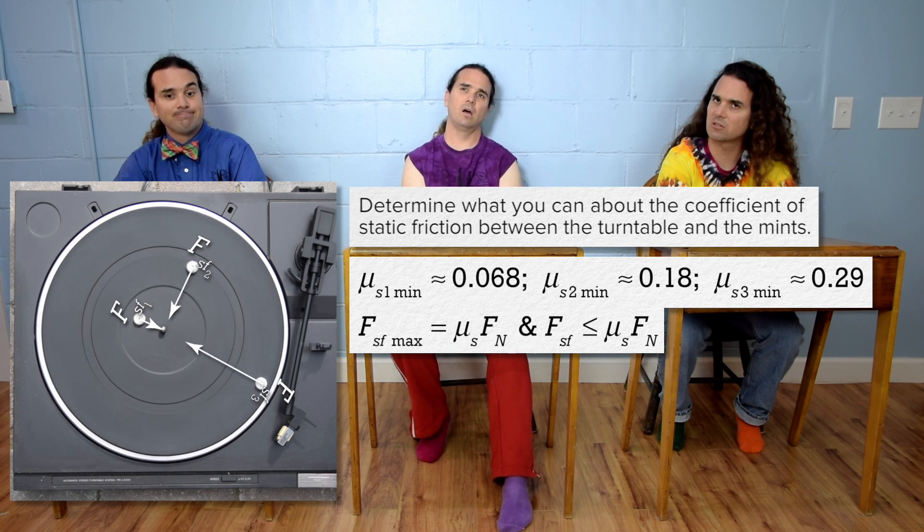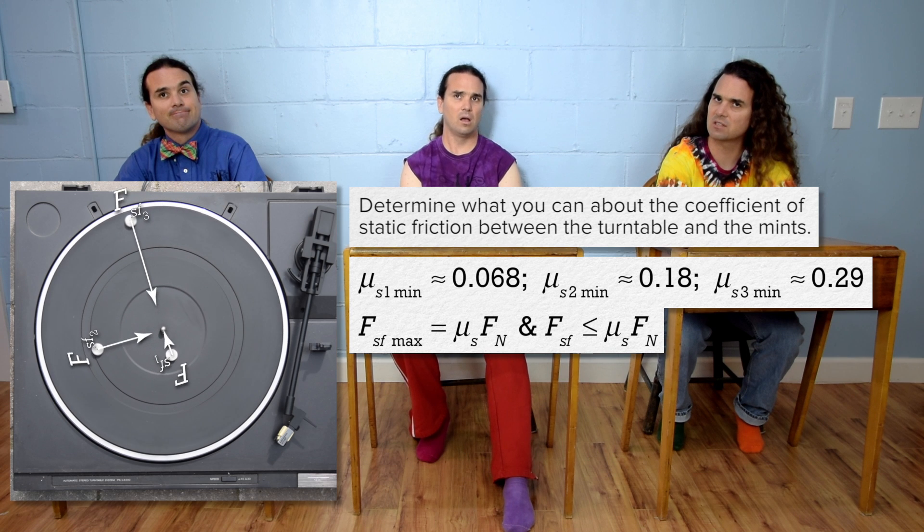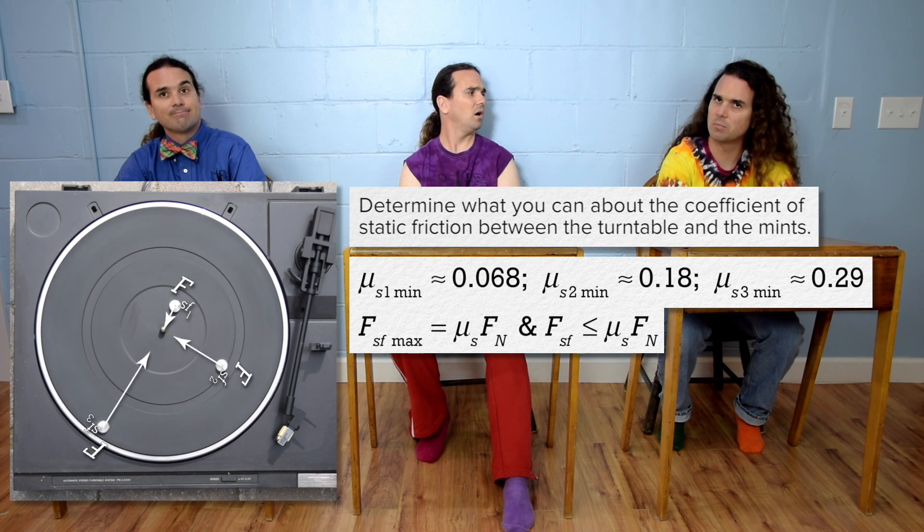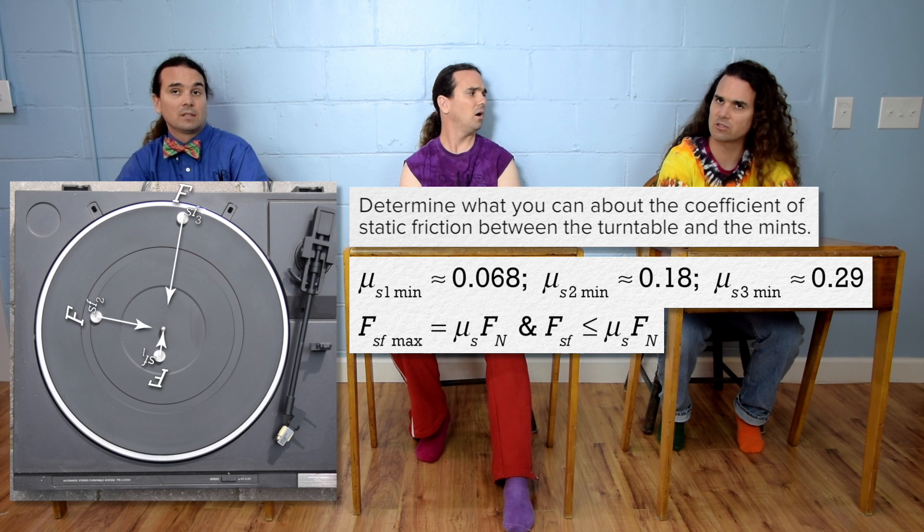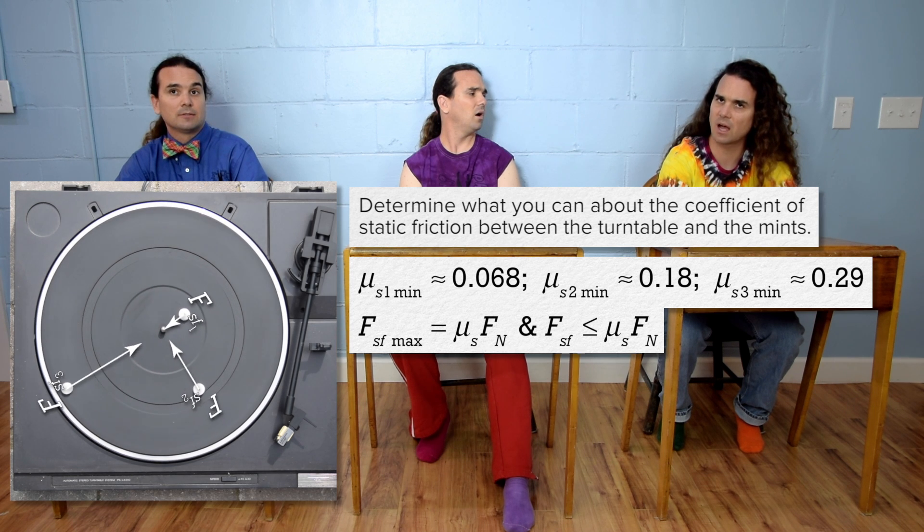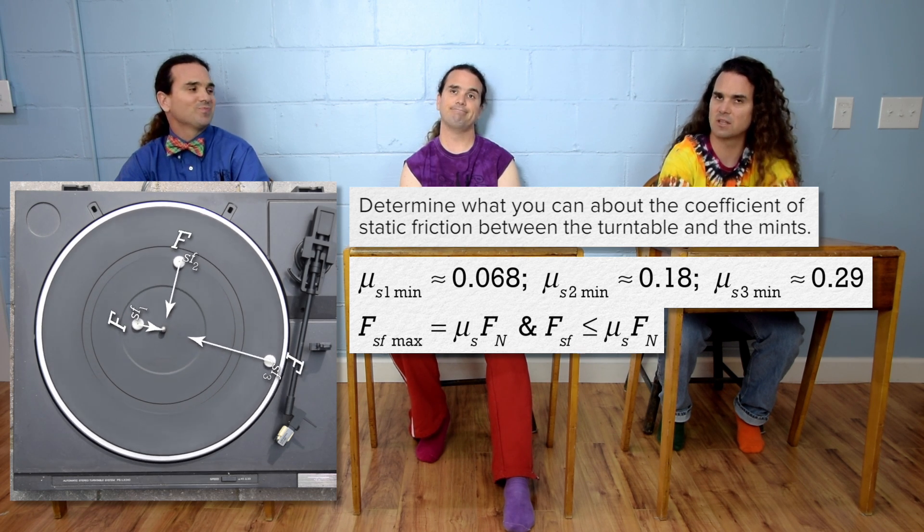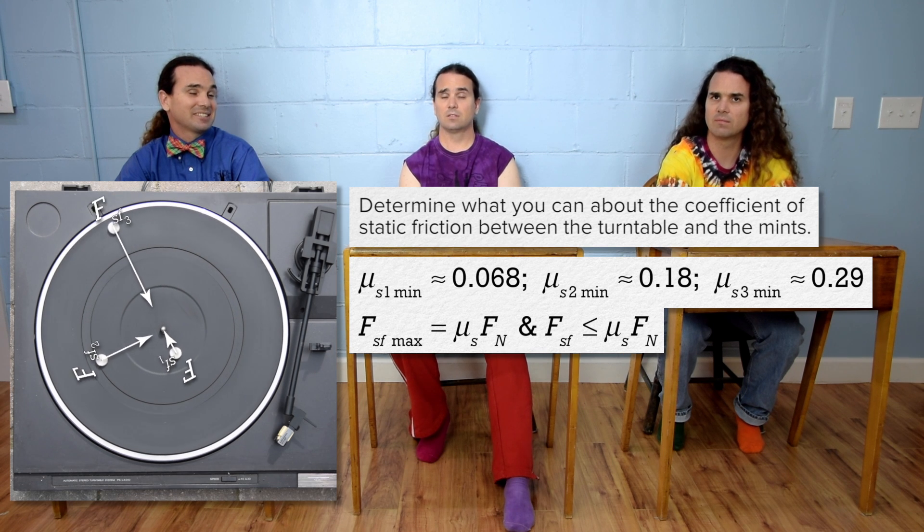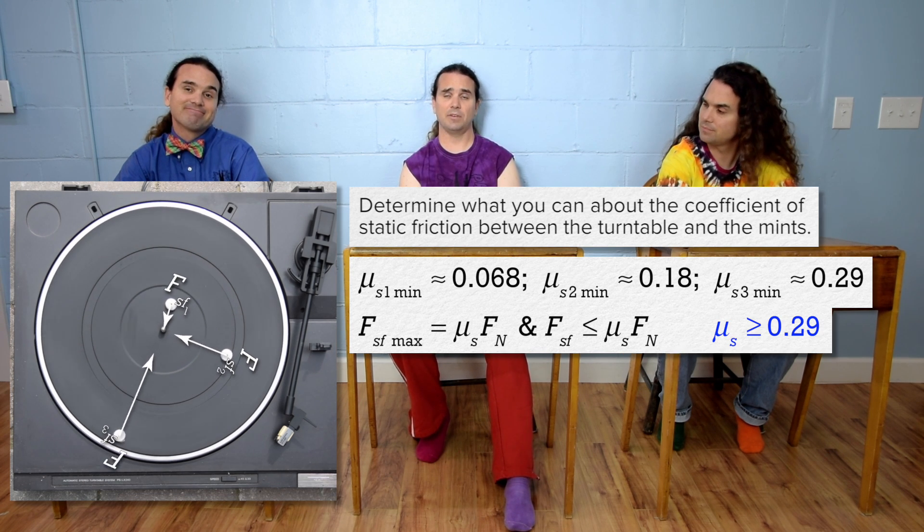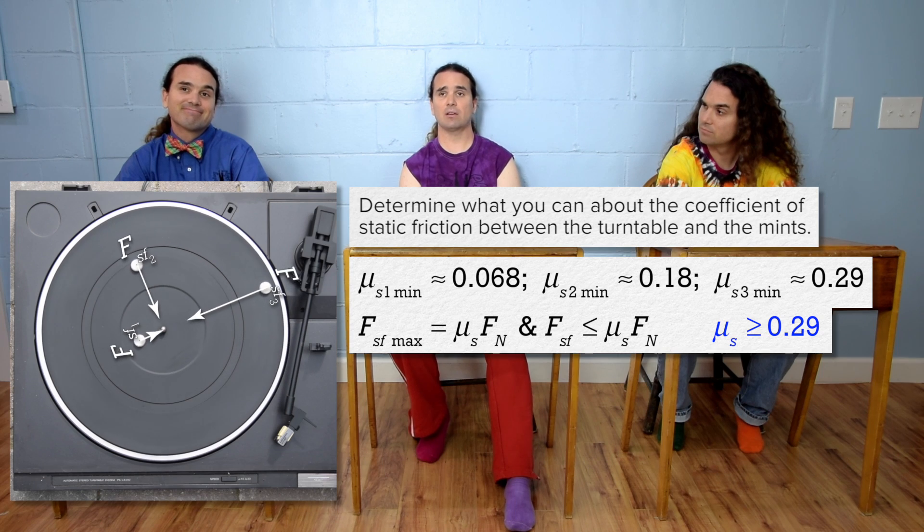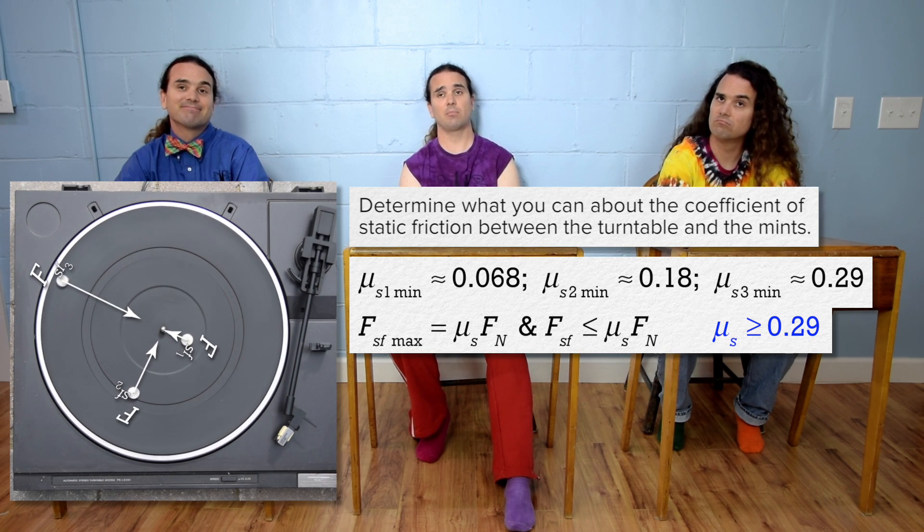So then, the answer is that the coefficient of static friction must be equal to or greater than the largest coefficient of static friction we got, because our mints always stayed on the turntable. So, our answer is that the coefficient of static friction is greater than or equal to 0.29.